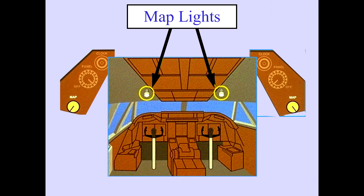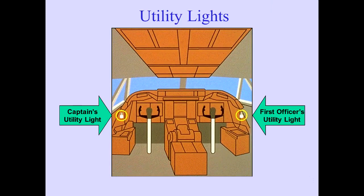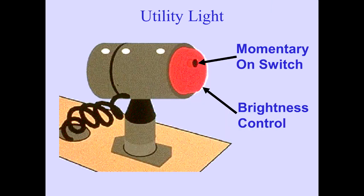The pull-on, push-off map light controls regulate map lights located above the windshield. Light sensors located on the lower right corner of each CRT, and a remote light sensor located above the glare shield, provide automatic control of brightness of each CRT as ambient light conditions change. Utility lights are located outboard of the captain's and first officer's seat on the sidewall. The utility light can be turned on using the brightness control, and the momentary on switch illuminates the light momentarily. Brightness can be regulated by rotating the brightness control.